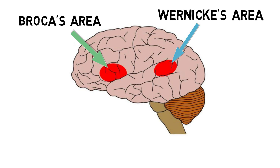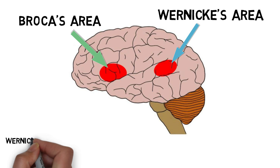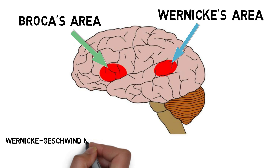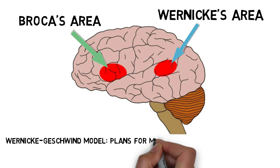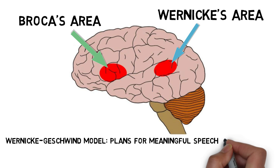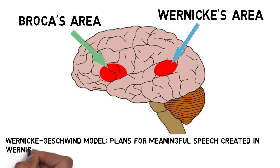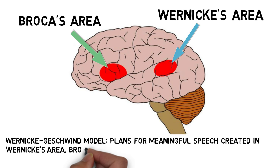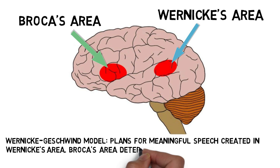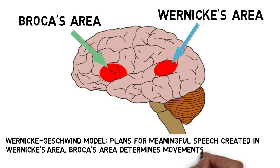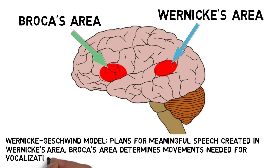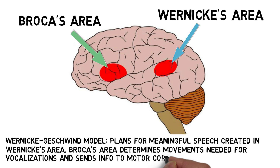which was later expanded on by neurologist Norman Geschwind and called the Wernicke-Geschwind model, suggested that Wernicke's area creates plans for meaningful speech, while Broca's area is responsible for taking those plans and determining the movements — like of the tongue and mouth — required to turn those plans into vocalizations.